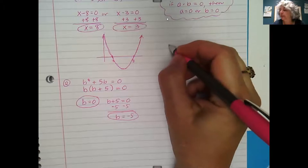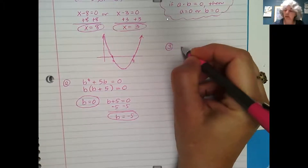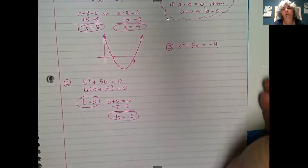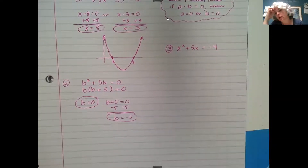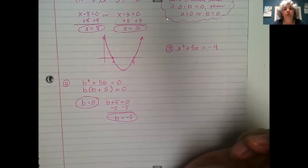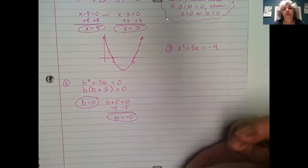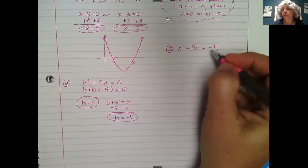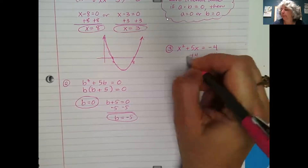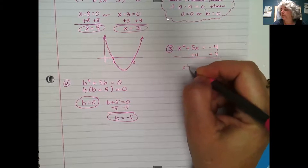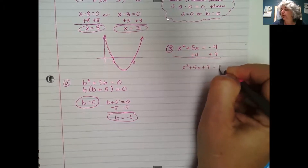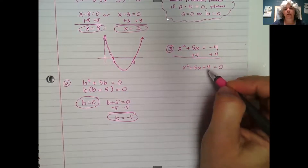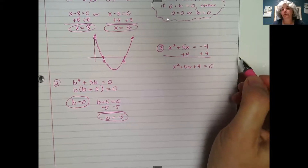Example three: x squared plus 5x equals negative 4. This one is not set equal to zero already, so we have to do that step first. To get this equal to zero, we add 4 to both sides, giving us x squared plus 5x plus 4 equals zero. It's a good idea to put terms in standard form in descending order of degree so that it's easier to factor.